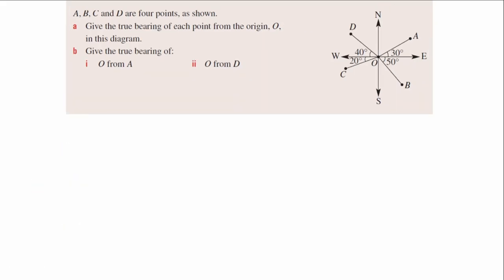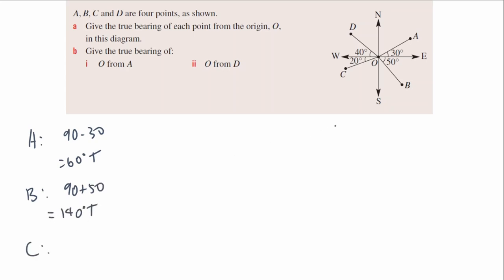Now it's your turn — have a go at these by yourself and unpause the video when you're ready. For finding the true bearing of each point from the origin: Point A is 90 minus 30, giving 60 degrees true. Point B is 90 plus 50, giving 140 degrees true. Point C is 270 minus 20, giving 250 degrees true. Point D is 270 plus 40, giving 310 degrees true. Give yourself a tick for each one you got correct.